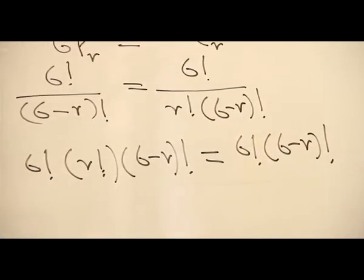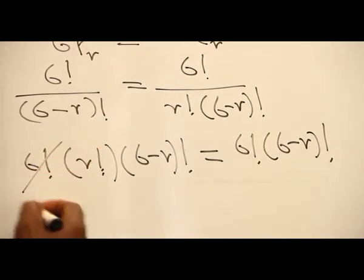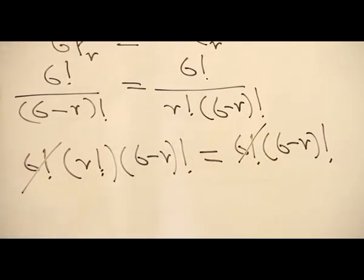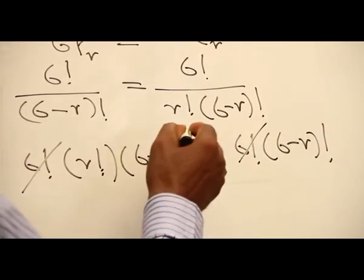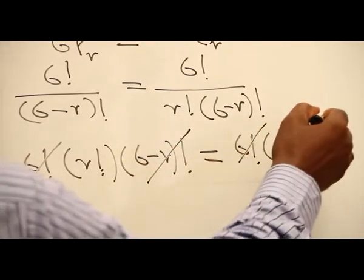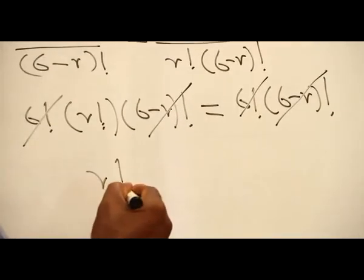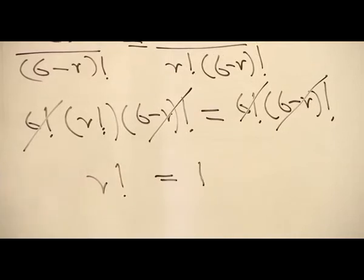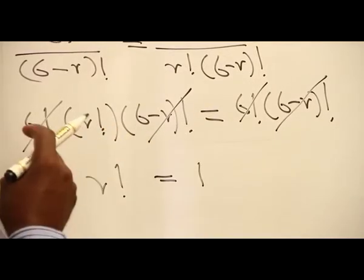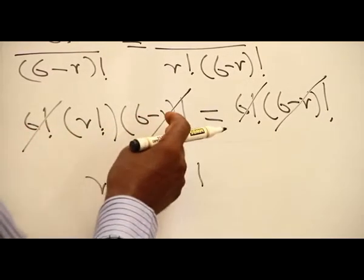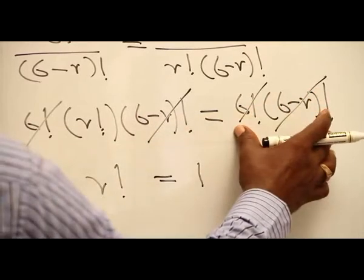As you can see, 6 factorial cancels 6 factorial on both sides, leaving us with r factorial equals 1.